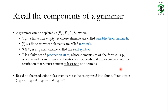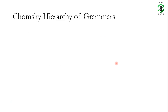Grammars can be categorized into four different types called type 0, type 1, type 2, and type 3 grammars. These grammars are organized by a hierarchical model by Noam Chomsky, and the model can be depicted as follows.